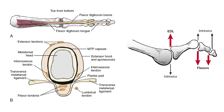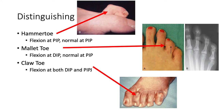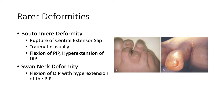Hammer, claw, and mallet toes are very ortho-sounding, so distinguishing them: we treat them all fairly similarly, but it is important to know the difference. With the hammer toe you have flexion at the PIP; with a mallet toe you have flexion at the DIP and normal at the PIP; with a claw toe you have flexion at both the DIP and the PIP. All of these will typically be met with extension at the MTPJ, however mallet toes are often fairly straight with just that flexion at the DIP.